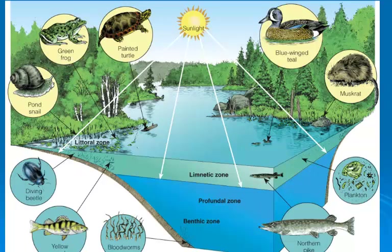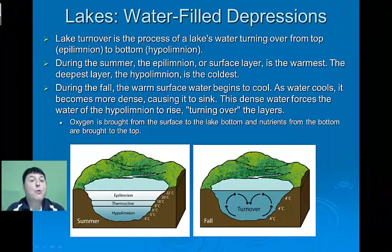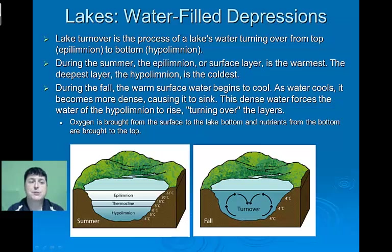If we took our muck up to the surface to examine it, we'd find that it would be dark, almost black in color and smelling of decomposition. One way that the nutrient-rich water from the bottom of the lake can come up to the top to feed organisms there, and the oxygen-rich water of the surface can go to the bottom to support more decomposition, is through a process called turnover.